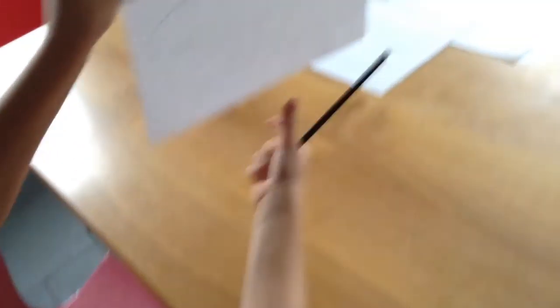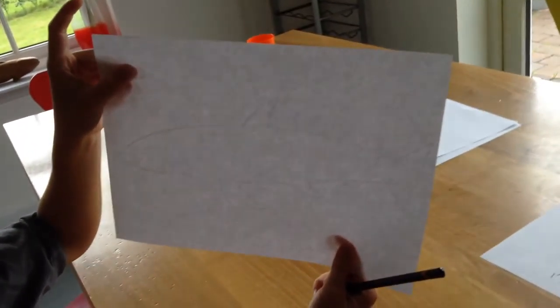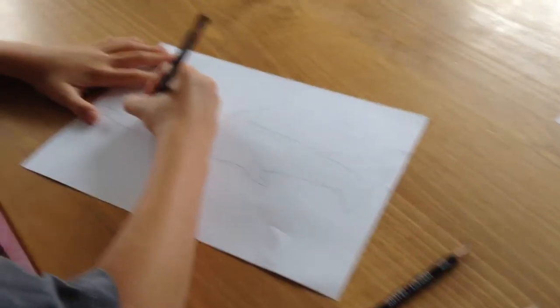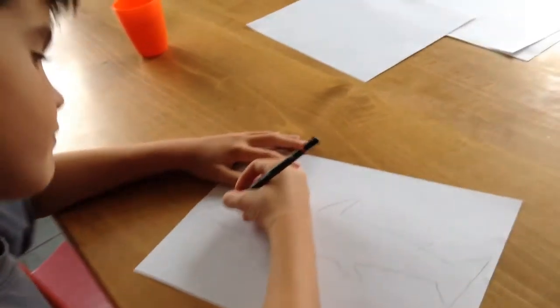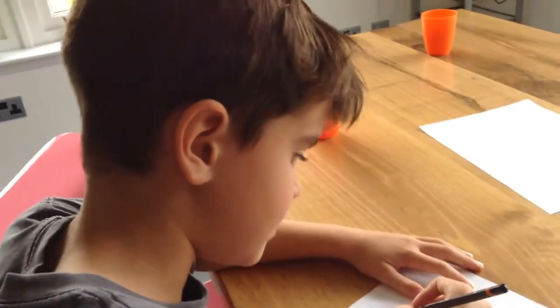This is what the outsides look like if anyone wants to know. Now I'm going to be doing the eyes. I'm going to be doing the eyes with 6B on the outside.